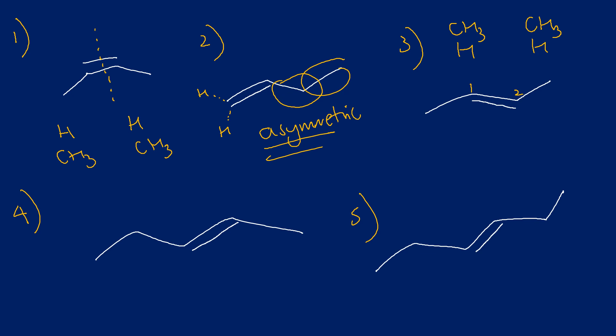Number four: identifying my double bond - on the right hand side there's a H and a CH3; on the left hand side there's a H and a C2H5 ethyl group. So number four is asymmetric.